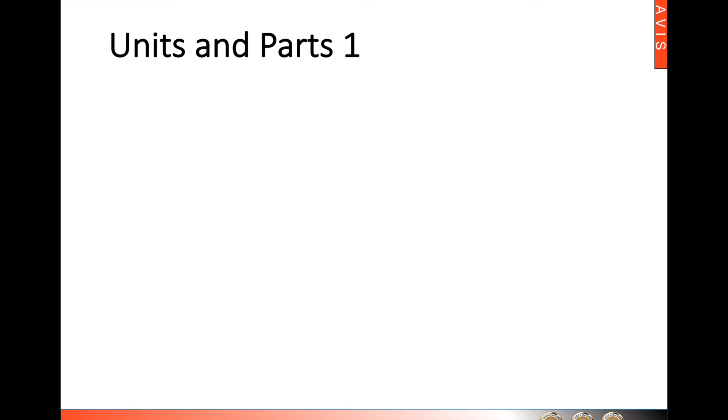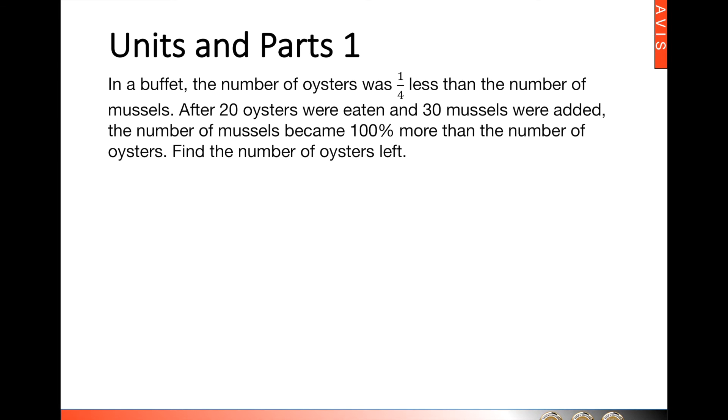Let's take a look at the units and parts type 1. From the question, we can see that 20 oysters were eaten but 30 mussels were added. So clearly, there's a different change to both quantities. So we're going to use units and parts for this question.